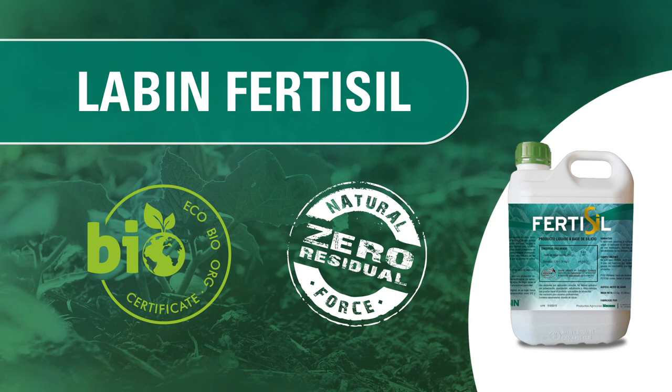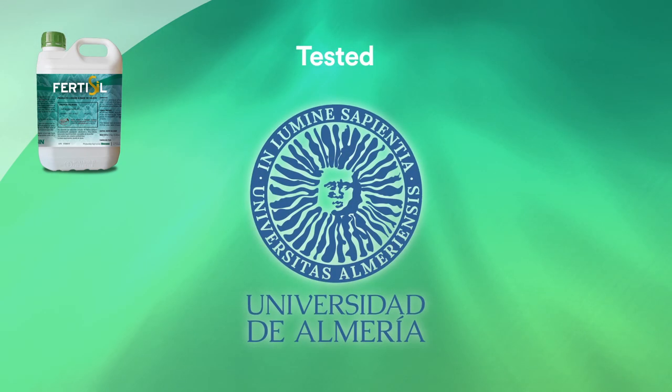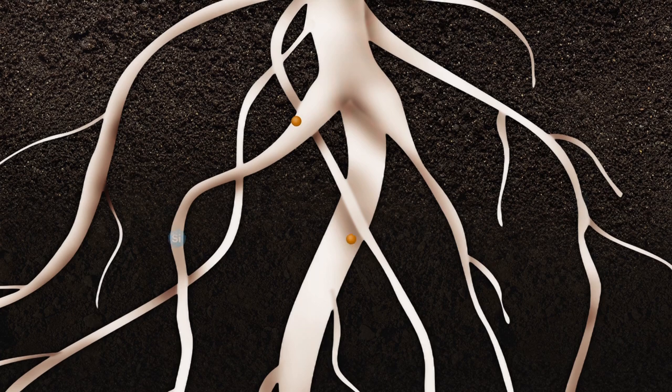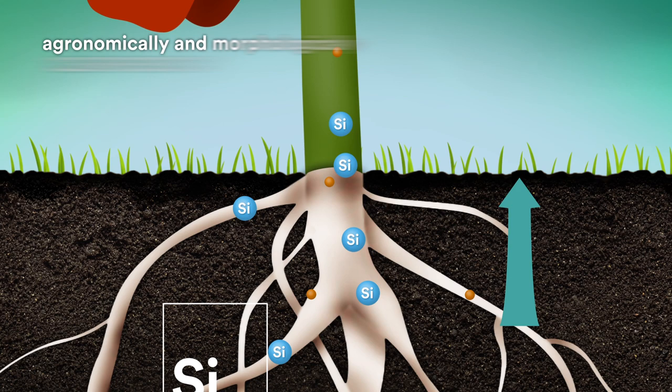Labin Ferticill was developed thanks to more than 70 years of experience of Labin, tested by the University of Almeria, Spain. It has managed to boost the beneficial action of silicon in fertigation in an optimal and assimilable way with visible results both agronomically and morphologically.